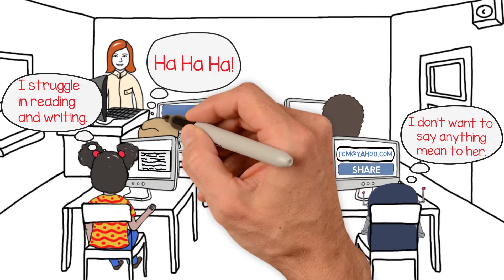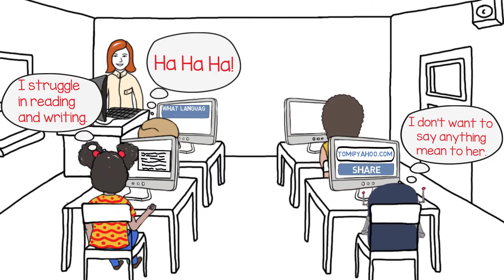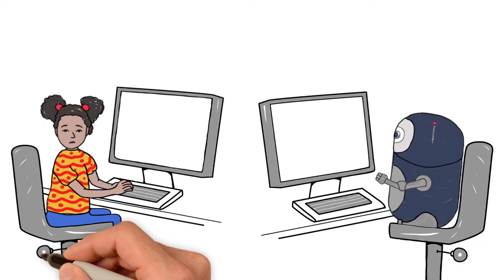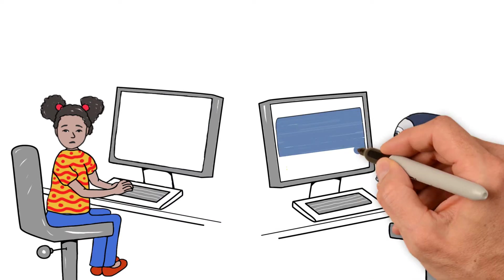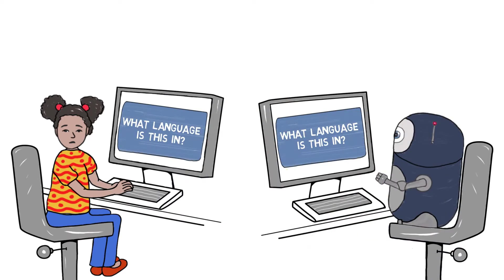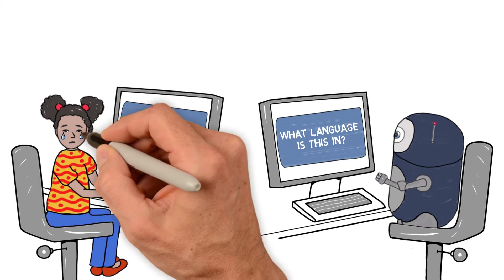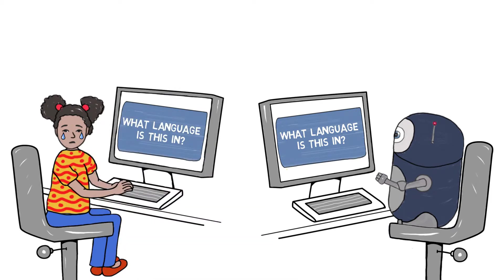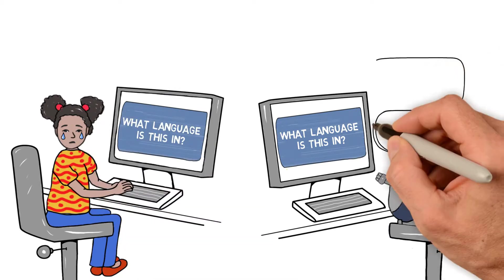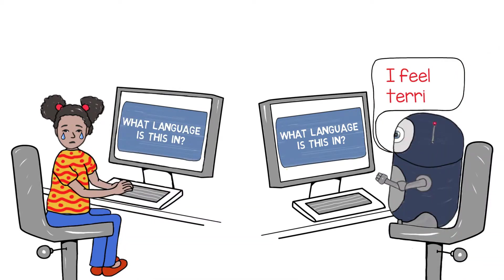All of a sudden, he heard laughter from across the room. His friend had read the paper and written in the comments, "What language is this in?" A couple of other kids started laughing too. Then Digi looked at the girl who had written the paper. The comments appeared on her screen too. Digi knew this instantly when he saw tears fill her eyes. He felt terrible.